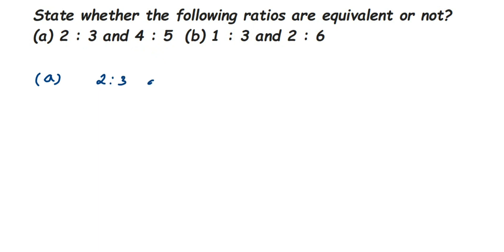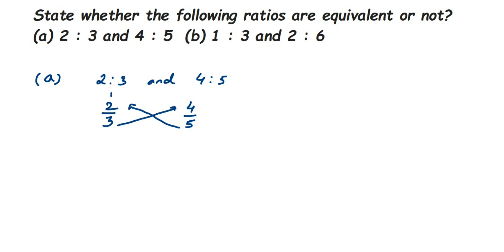We have 2 is to 3 and 4 is to 5, and we have to compare them to see if they're equivalent or equal. Ratios can be written in fractional form: 2 is to 3 as 2/3, and 4 is to 5 as 4/5. The easy way is to cross-multiply — multiply 5 with 2 to get 10, and multiply 3 with 4 to get 12. Since 10 and 12 are not equal, these ratios are also not equal.